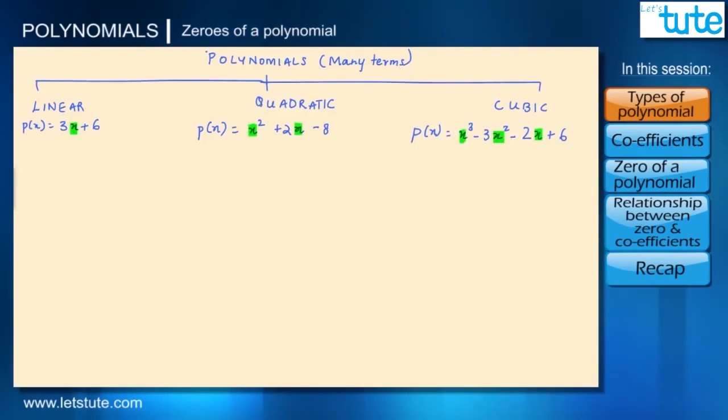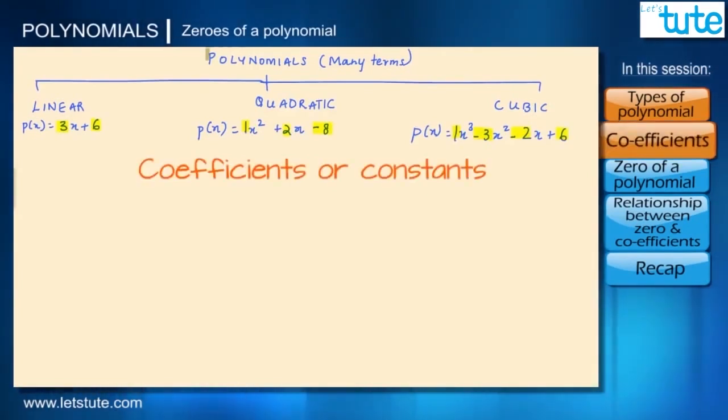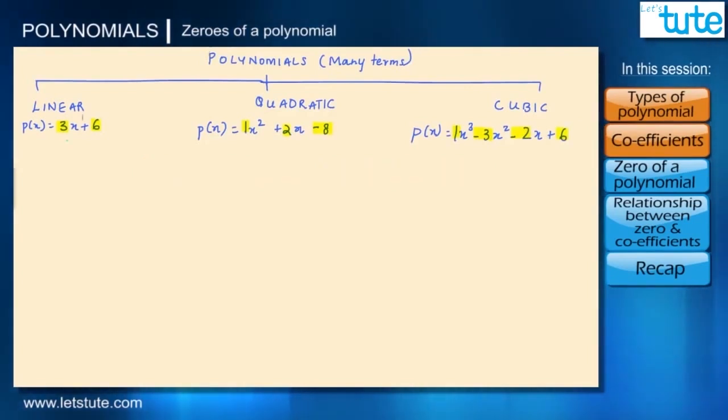Here the letters that we see have unknown values and they are called variables. Here we have just one variable that is x. The numbers that we see before the variables are called coefficients or constants. The highest power for 3x plus 6 is 1 therefore it is a linear polynomial. The highest power here is 2 therefore it is a quadratic polynomial. And the highest power here is 3 therefore it is a cubic polynomial.